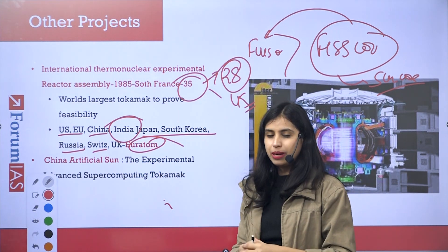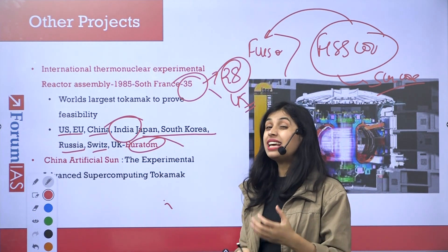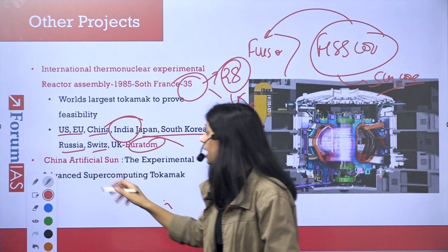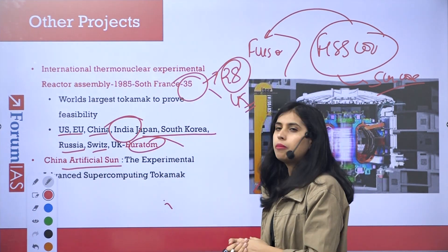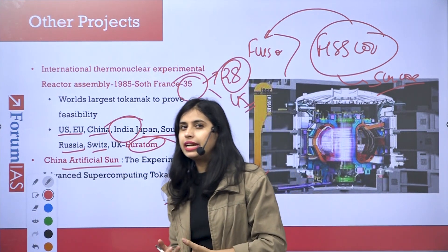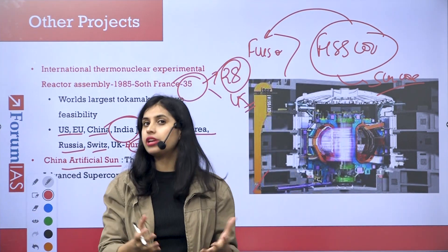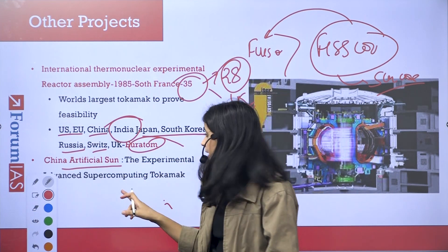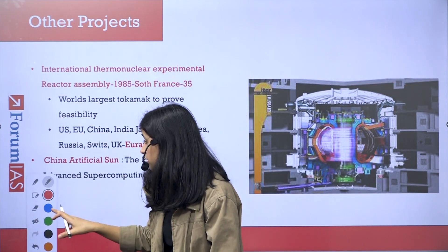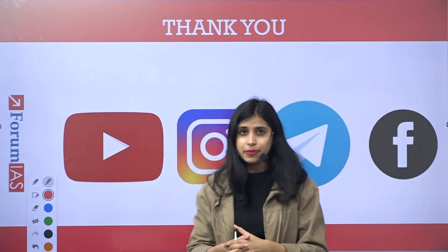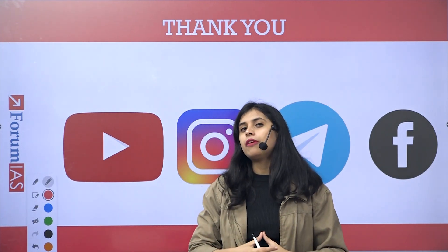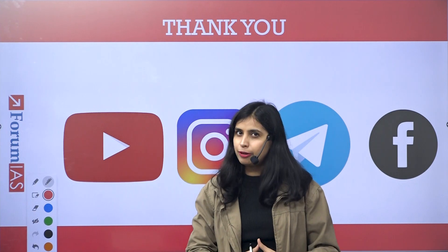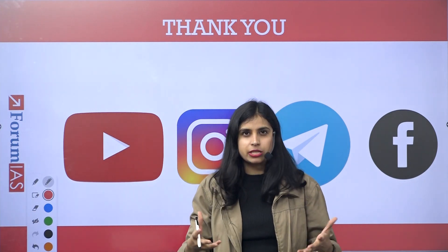These are not the only countries. China is running its own project. That is China artificial sun in which it is actually using advanced supercomputing Tokamak in order to generate enough electricity using fusion reaction. So these are existing two running projects that are trying to make the fusion reaction possible. If that becomes possible, energy efficiency will increase and many of the energy demands of this country and the rest of the world will be met. I hope this becomes possible someday.